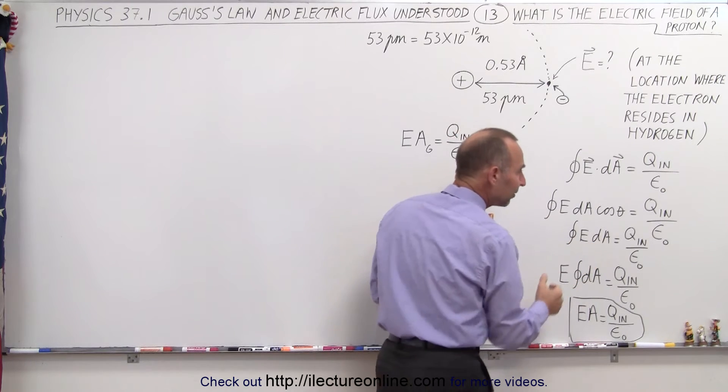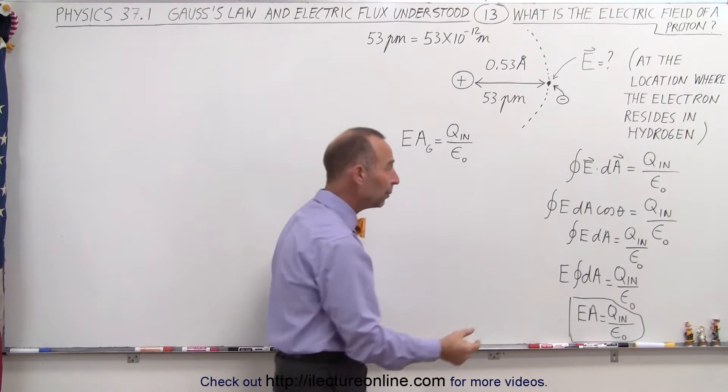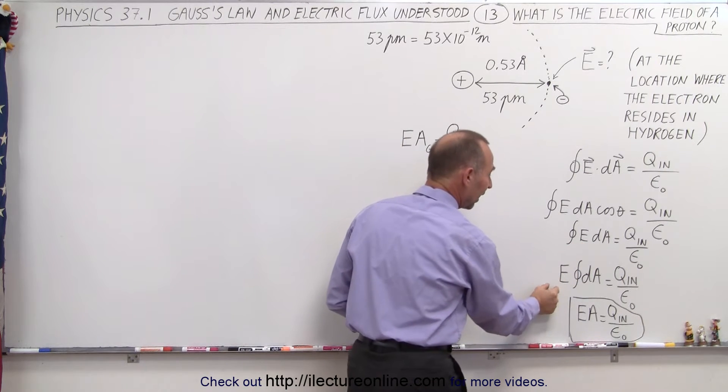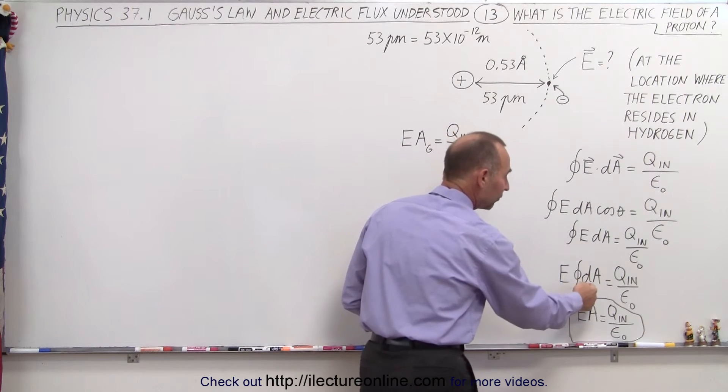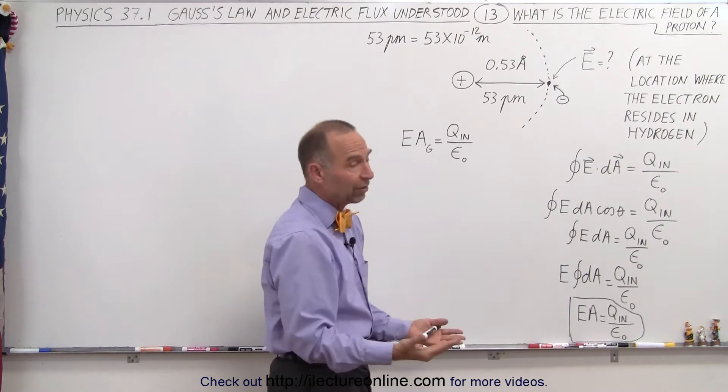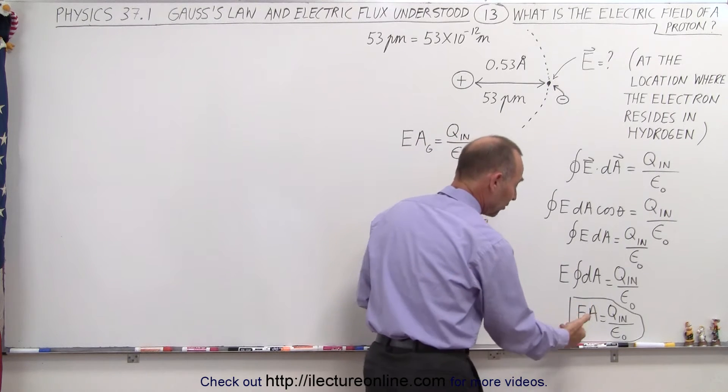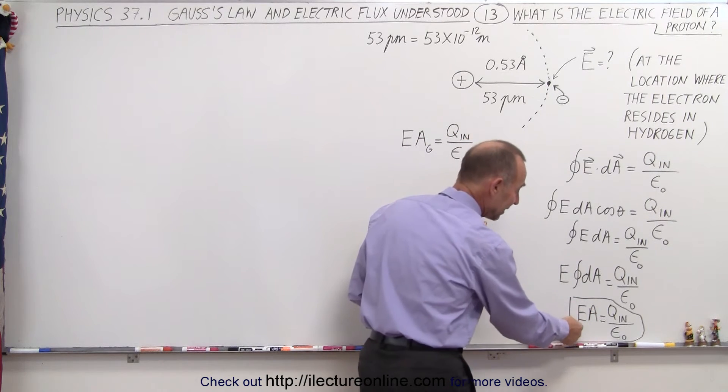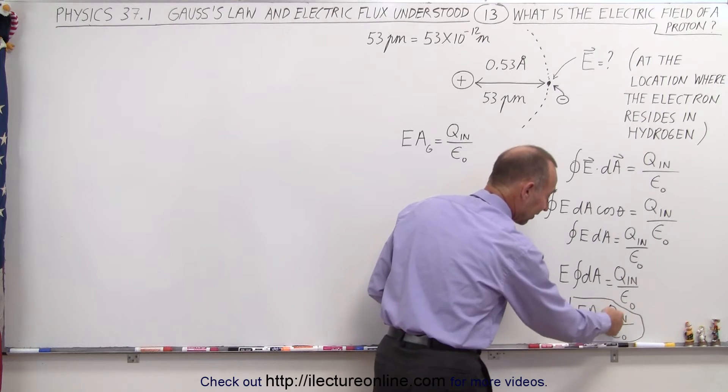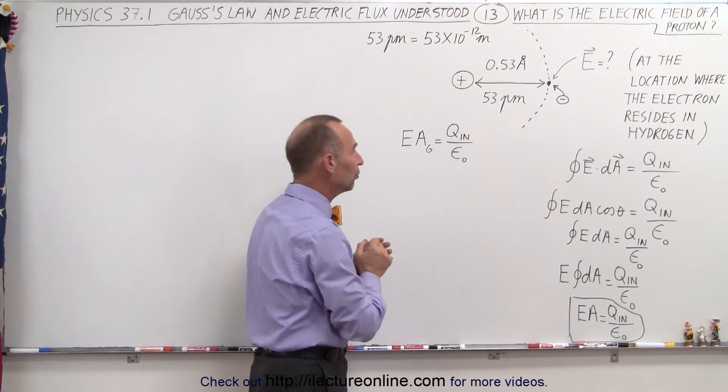And so we have the integral of E dot dA. Since the magnitude of the electric field is constant all the way around the surface, we can take that outside the integral sign, and it's simply an integral of the small area element over the Gaussian surface, which gives us the area of the Gaussian surface. So we end up with the equation E times A is equal to the charge inside the surface divided by epsilon sub nought.